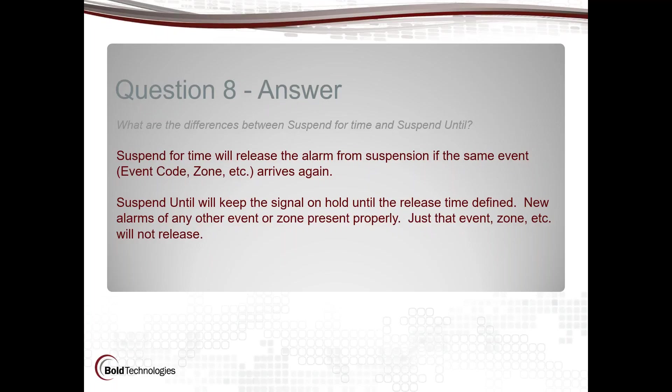If I'm putting something on hold until tomorrow at 1 a.m., 3 a.m., or 7 a.m., it will stay on hold no matter how many times that individual event arrives — same zone, same category, everything. I did double-check this yesterday: it is only that single event that will be on hold until; every other event does come in appropriately, priority notwithstanding. Always remember: if you're doing it by time, anything new you get is going to release that suspension time. If you do suspend until, it will stay there until the end.